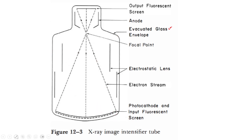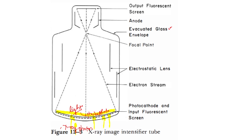The X-ray beam enters the image intensifier tube. The input fluorescent screen absorbs the X-rays. The X-ray photon energy is converted to light energy — the input phosphor absorbs the X-rays and converts them into light. This light then strikes the photocathode, which produces photoelectrons.